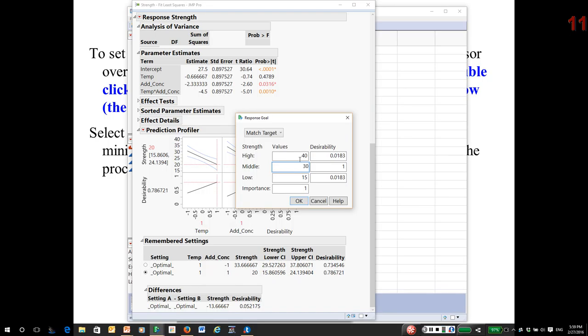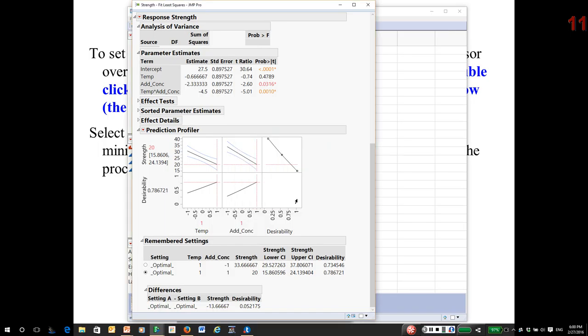But let's say 30 plus or minus 2. So I have engineering specifications that say the tensile strength of these parts should be between 32 and 28 psi, and I'd like to hit a target of 30.